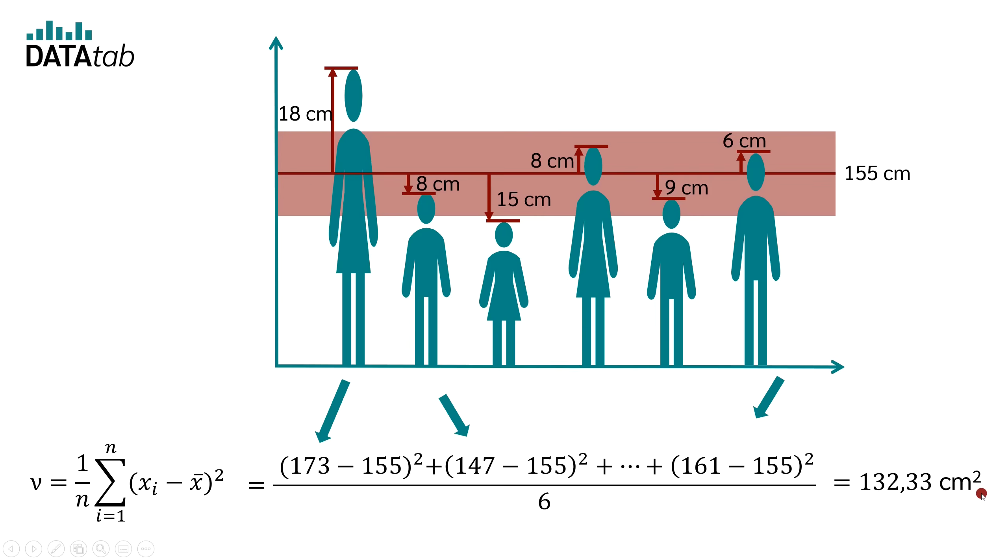So each person has some squared deviation from the mean, of course, but on average, the squared deviation from the mean is 132.33 centimeters squared. At this point, you can already see why the variance is a little bit harder to interpret than the standard deviation. This brings us to the next point.